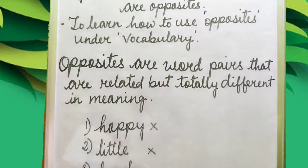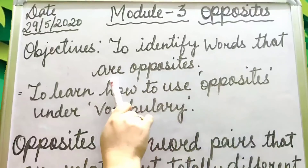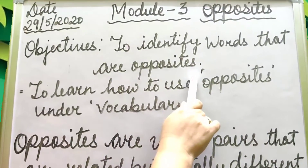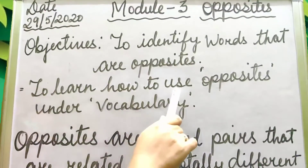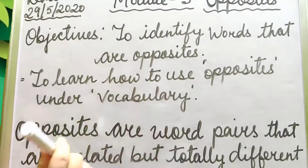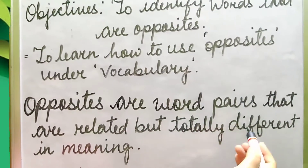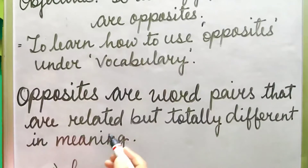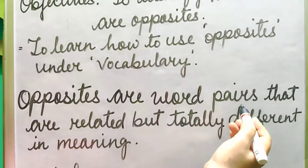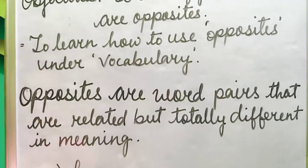From vocabulary, we will do opposites. Look at the board. Let us read first the objectives: to identify words that are opposites, and to learn how to use opposites under vocabulary. Opposites are word pairs that are related but totally different in meaning.